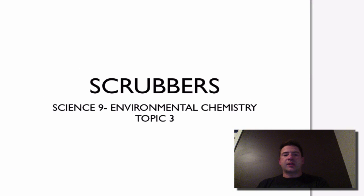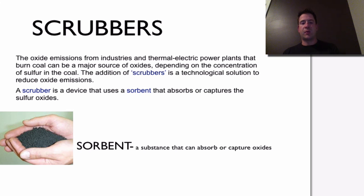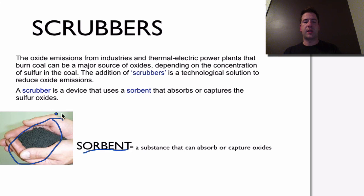Hi guys, Mr. Sonnenberg here. Today we're going to be talking about scrubbers. This is for Science 9, students studying environmental chemistry — topic 3 in your textbook. A scrubber uses a sorbent. A sorbent is a substance that can absorb or capture oxides. Drawing your attention down here, here's a picture of a sorbent that you might find inside of a scrubber.